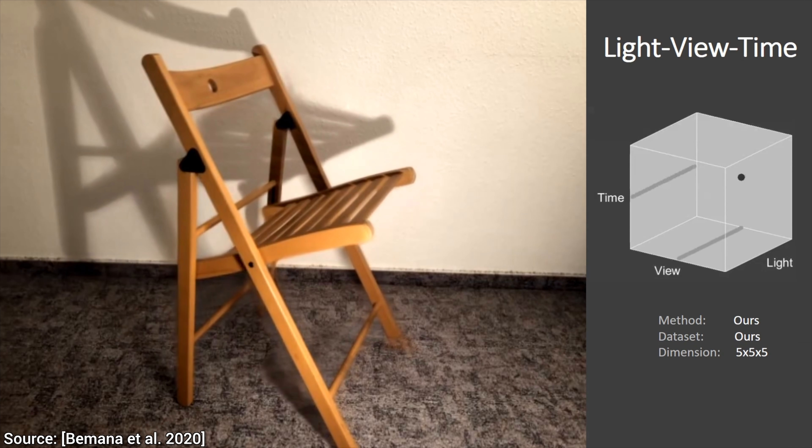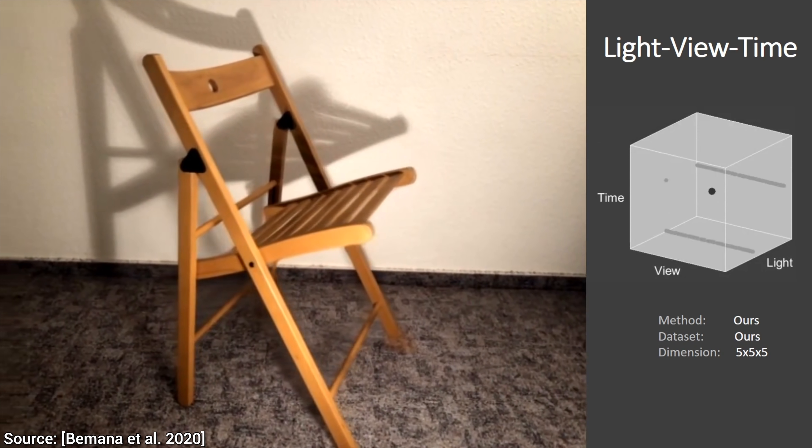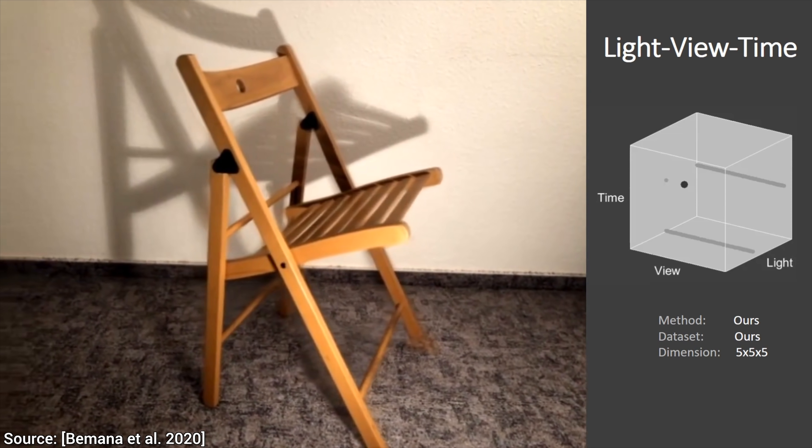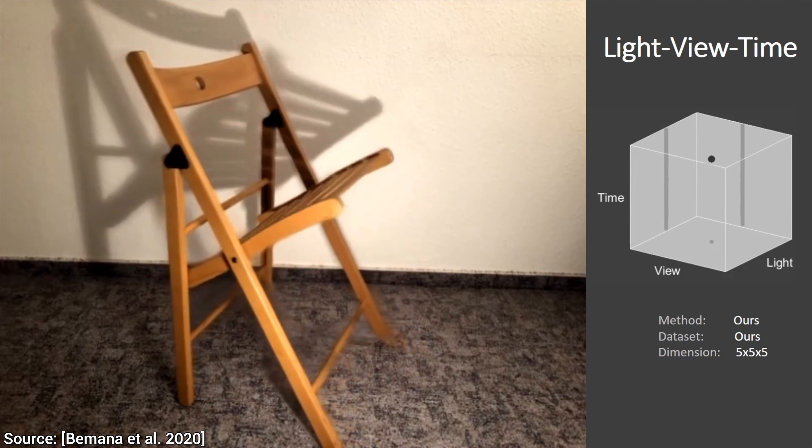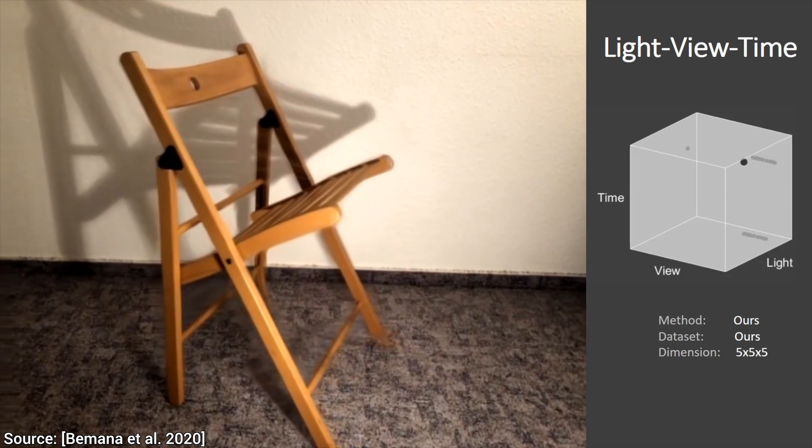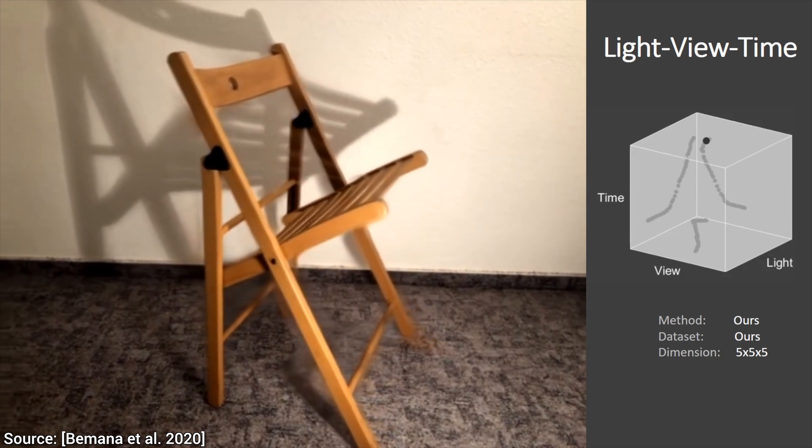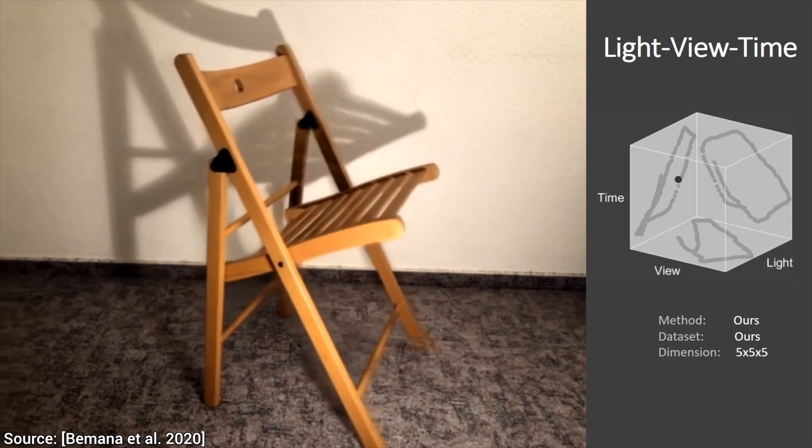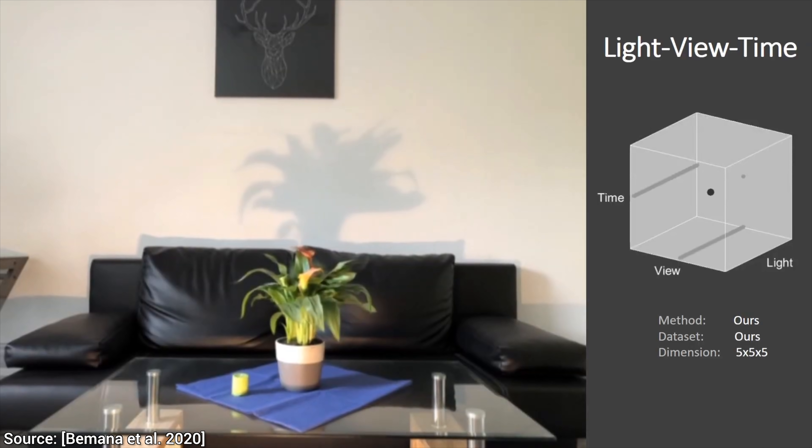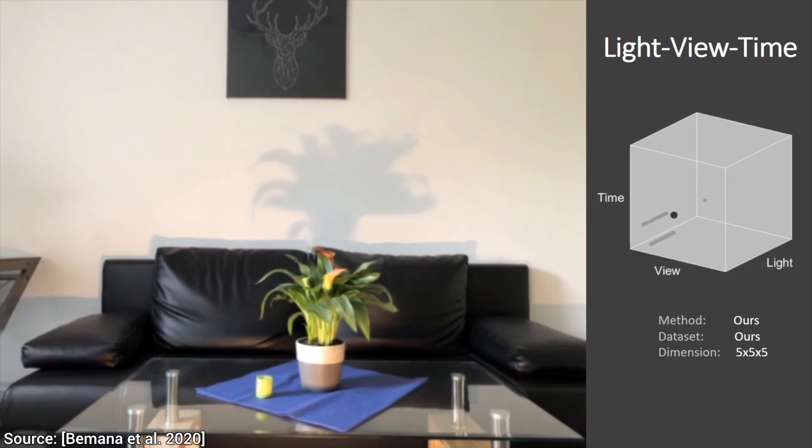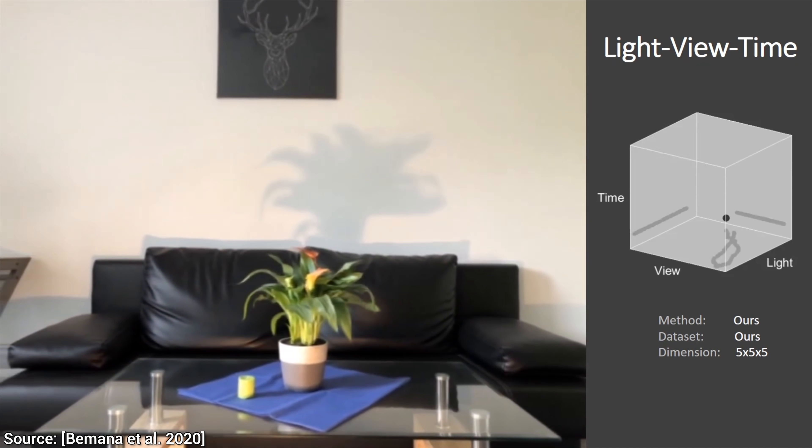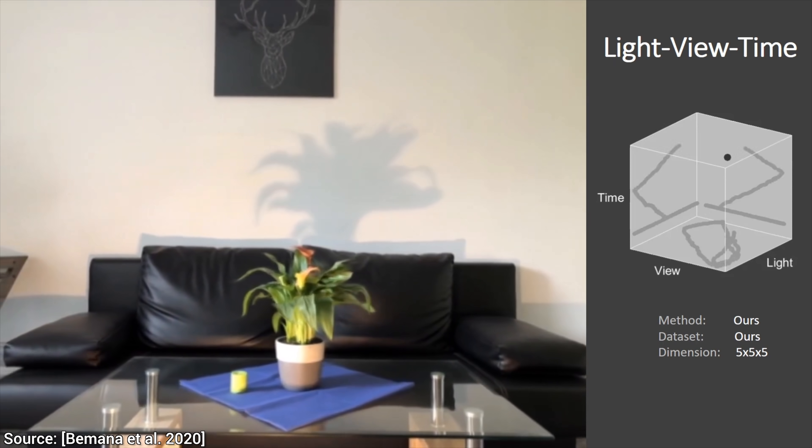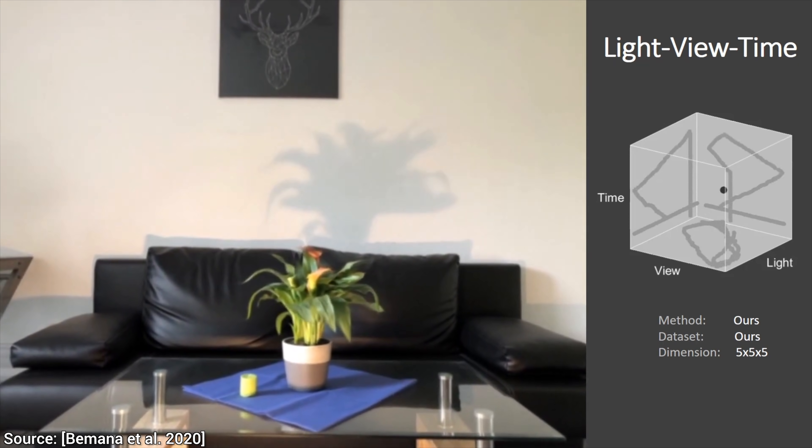But, still, the results that we see here can range from absolutely amazing to trivial, depending on just one factor. And that factor is, how much training data was available for the algorithm. Neural networks typically require loads of training data to learn a new concept. For instance, if we wish to teach a neural network what a cat is, we have to show it thousands and thousands of images of cats. So, how much training data is needed for this?